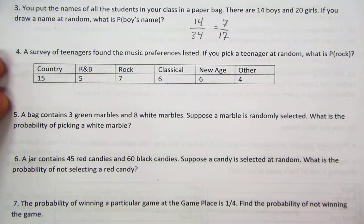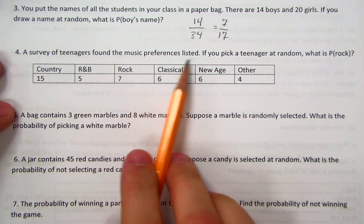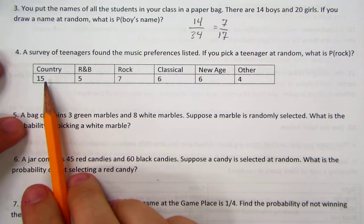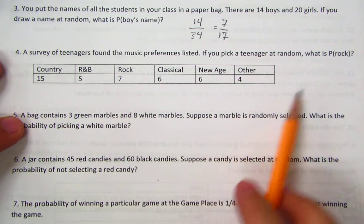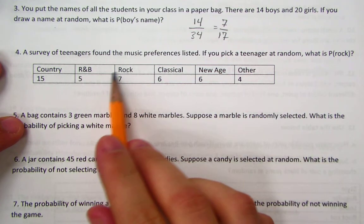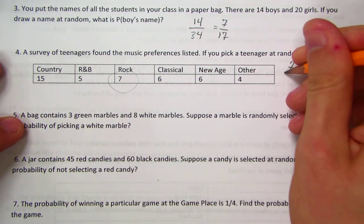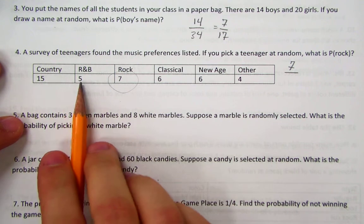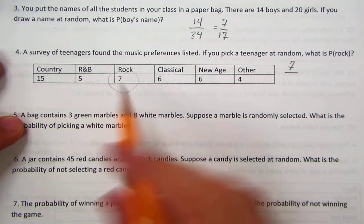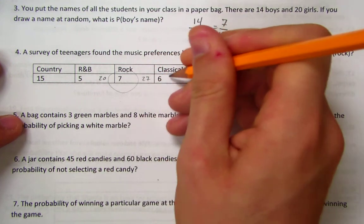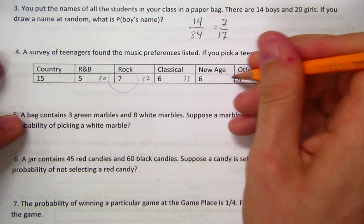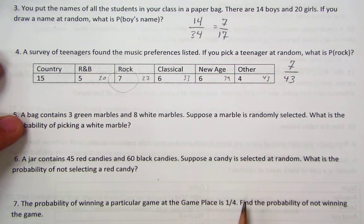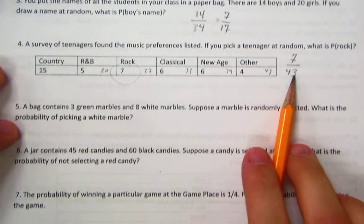Number 4: A survey of teenagers found the music preferences listed below. If you pick a teenager at random, what is the probability of rock? This one is essentially already drawn out for you, given a table with the data in it. I'm trying to find the rock, so my numerator would be the number of rock, 7. My denominator comes from adding up these numbers. So you have to be a little careful about how you're adding. You added them one at a time and wrote down the sum. 15 plus 5 is 20, plus 7 is 27, plus 6 is 33, plus 6 is 39, plus 4 is 43. So you get 7 out of 43, which is now irreducible. 43 is a prime number.